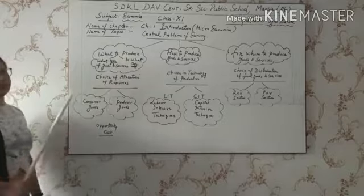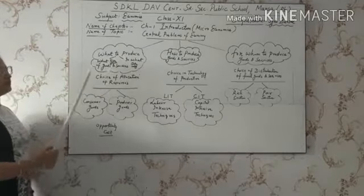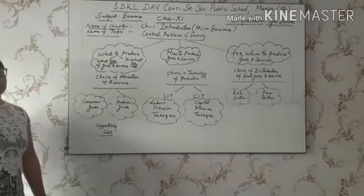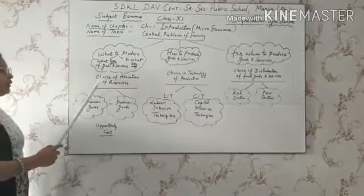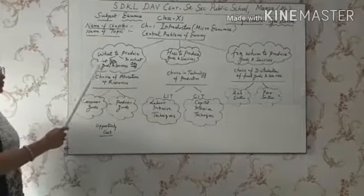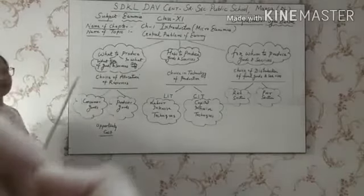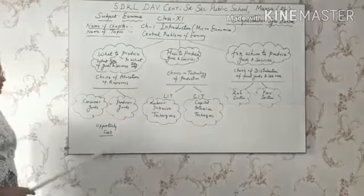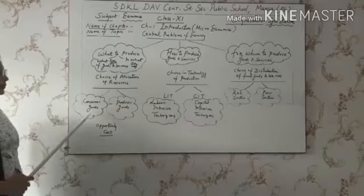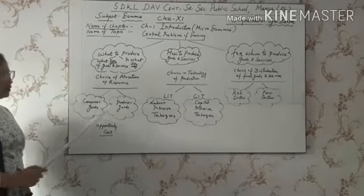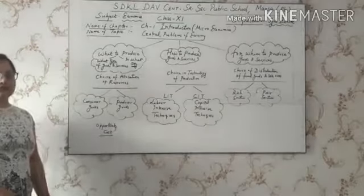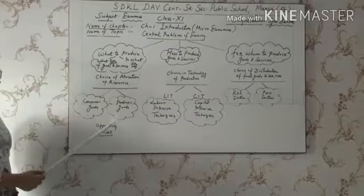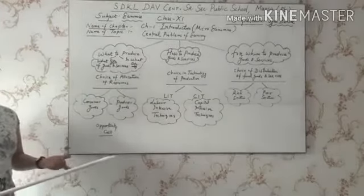The first problem — what to produce — means what type of goods and services and in what quantity should be produced. If resources were unlimited, there would be no problem of allocating them. Allocation means distribution of resources in the production of various goods. For example, an economy must decide whether to produce consumer goods or producer goods, essential goods or defense goods, because more of one commodity means less of another, since resources are limited.